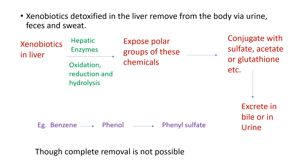For example, benzene oxidation forms phenol. Then phenol reacts with sulfate present in the liver and forms phenol sulfate, which is excreted via urine, bile, or sweat.